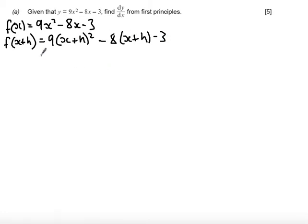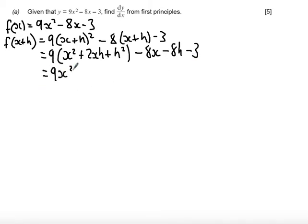Now, expand and simplify this expression. So, f of x plus h, 9 times x squared plus 2xh plus h squared minus 8x minus 8h minus 3. And then finally, expand out that last bracket. So, we get 9x squared plus 18xh plus 9h squared minus 8x minus 8h minus 3.